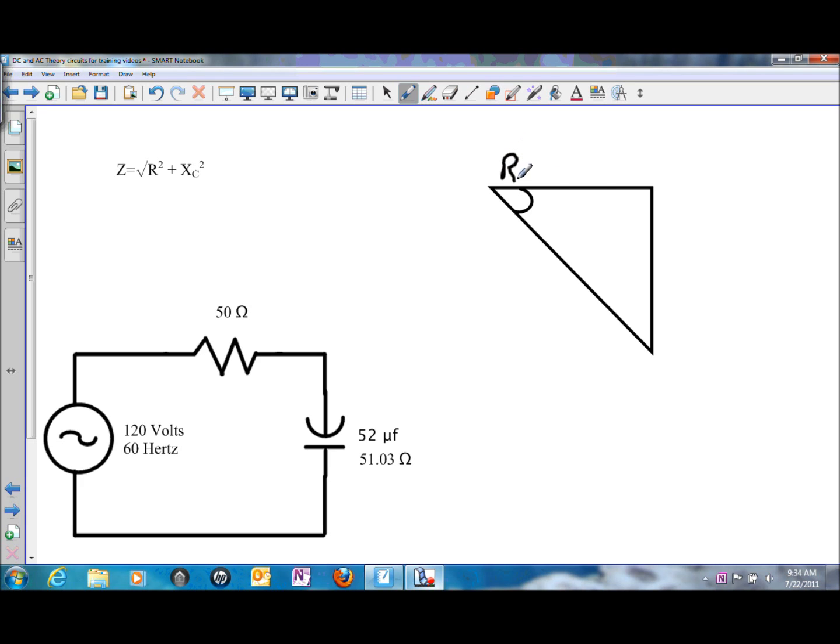The side adjacent to angle theta is still going to be the resistive side of the triangle, and the side opposite is going to be the reactive side, just like it is for any inductive circuit. The hypotenuse of the triangle is going to be the impedance, so we are building an impedance triangle.